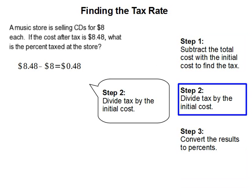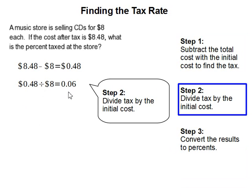Step 2: divide the tax by the initial cost. The tax is $0.48 and the initial cost is $8, so we divide that, and that gets us 0.06.